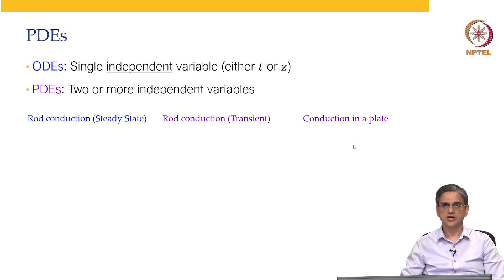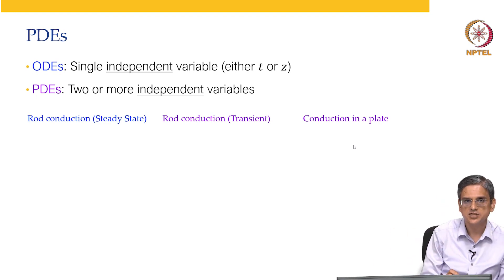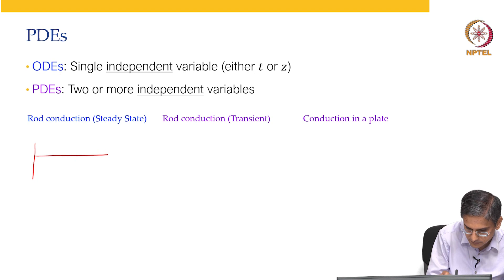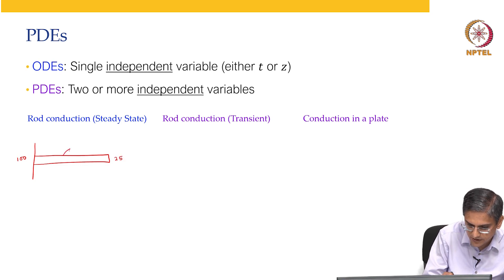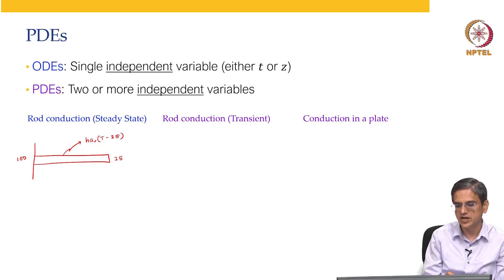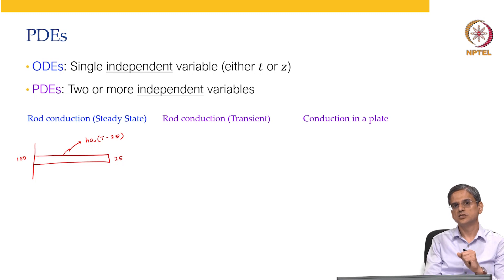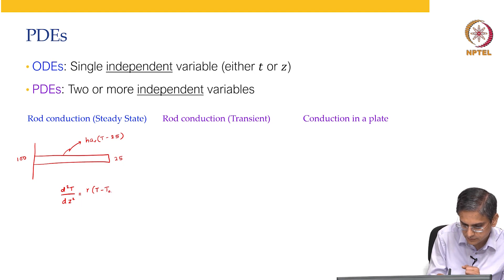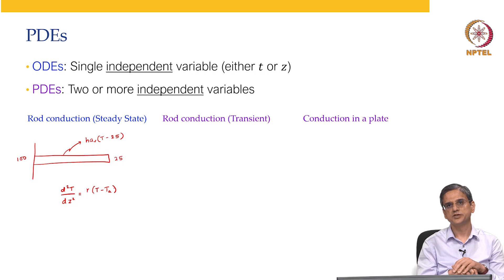We had covered rod conduction in the previous week. Rod conduction results in an ordinary differential equation. The example that we took is: we have a rod with one end at 100 degrees Celsius, the other end at 25 degrees Celsius, and it loses heat to the surroundings proportional to H·A·V·(T minus 25). At steady state, the equation we obtained was d²T/dz².